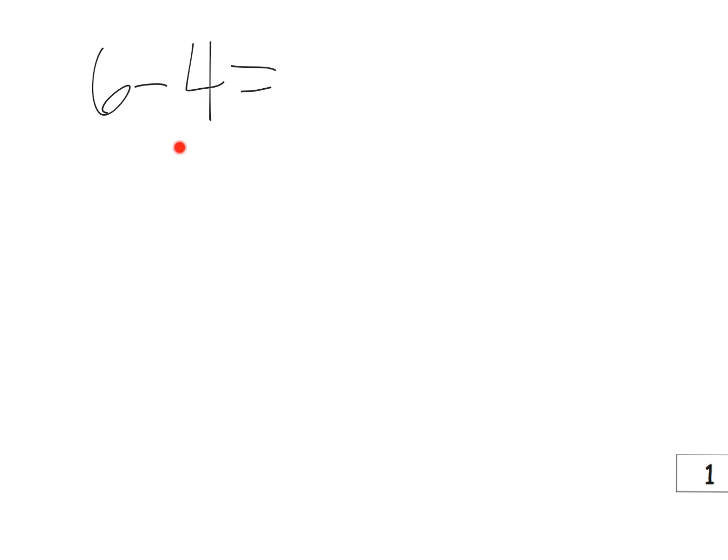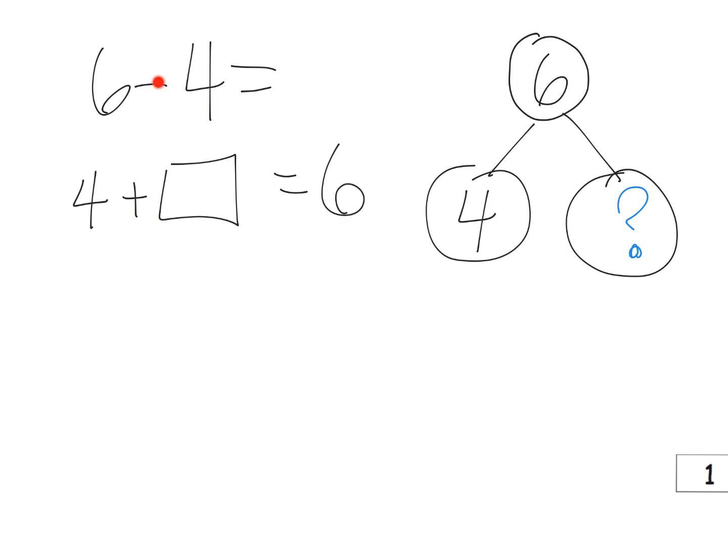When we see the problem 6 minus 4, we want to start with connecting that to the number bond that our students are already familiar with. So what would that number bond look like? It would look like a 6 and a 4, and then we would have our big old question mark right there. This is our related number bond. We also want students to see what's our related addition problem, so it would be 4 plus what equals 6. Now we've connected these three things: the original subtraction problem, the number bond, and our addition problem.